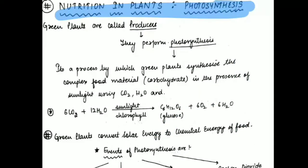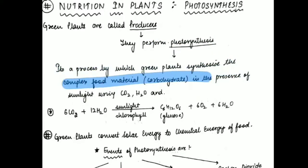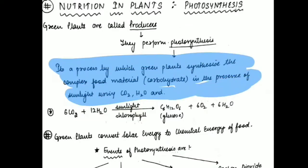Moving on, we will now study nutrition in plants, that is photosynthesis. Green plants are called producers because they perform photosynthesis — they make their own food and supply it to us. Photosynthesis is the process by which green plants synthesize complex food material, carbohydrates, in the presence of sunlight, using carbon dioxide and water in the presence of chlorophyll.